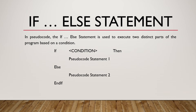The next part is the if-else statement. In pseudocode, the if-else statement is used to execute two distinct parts of the program based on a condition. It's the same as an if statement, but we have two parts: the first part executes if the condition is true, and if the condition is false, another part of the program will be executed.